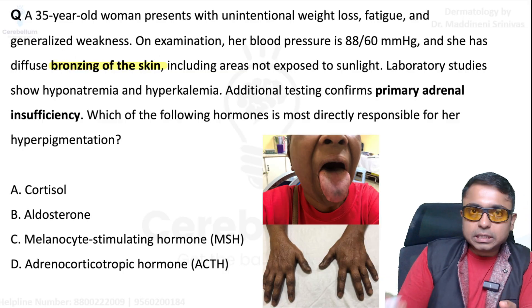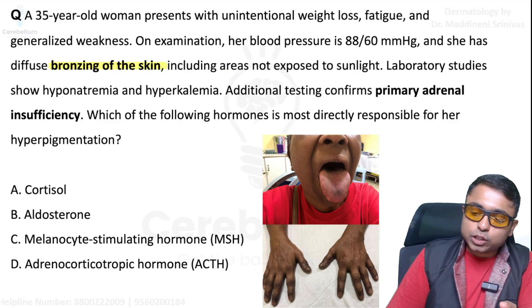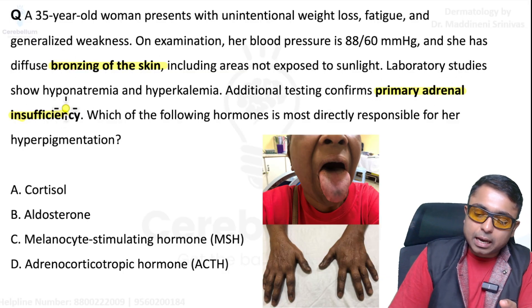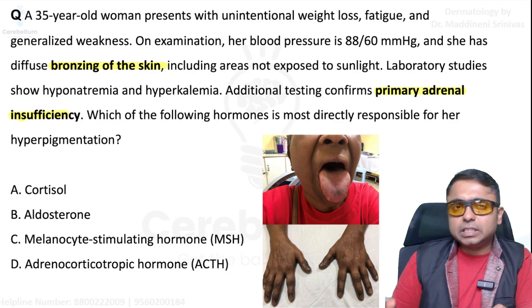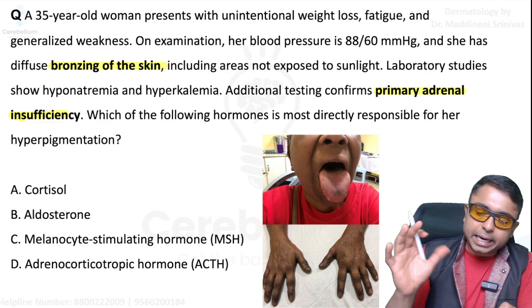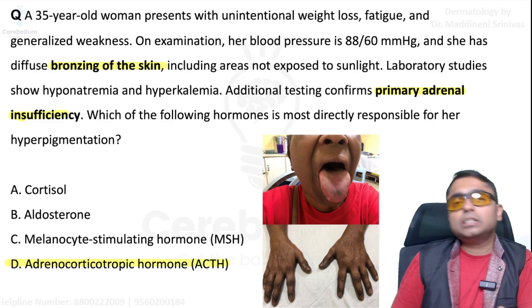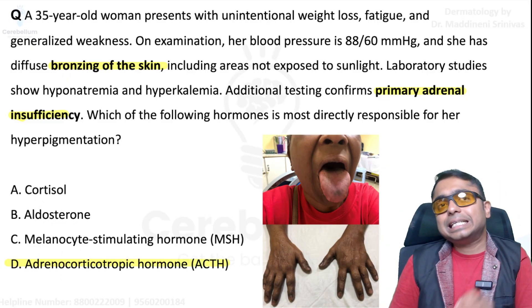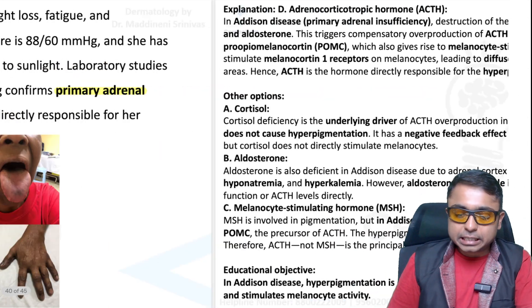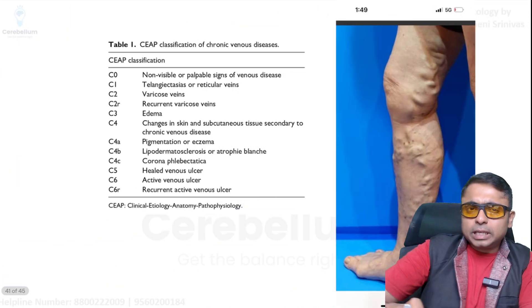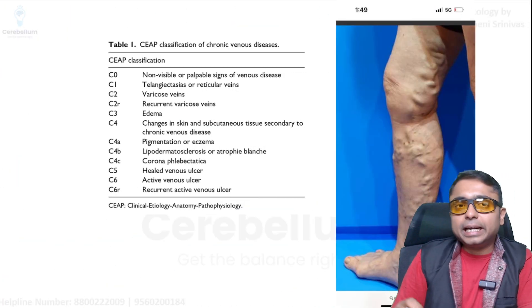This question shows bronzing of the skin — hyperpigmentation — pointing toward primary adrenal insufficiency, i.e., Addison's disease. The reason for this pigmentation is ACTH — adrenocorticotropic hormone.